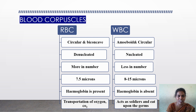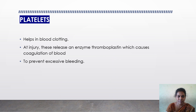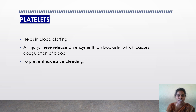The third component of blood is blood platelets. These are the very smallest cells present in blood. Their function is blood clotting — whenever we get an injury, platelets release an enzyme called thromboplastin, which causes coagulation (clotting) of blood, and because of this coagulation it prevents excessive bleeding.